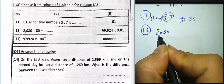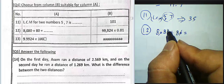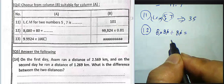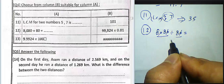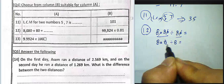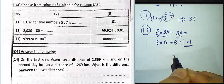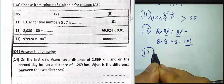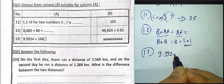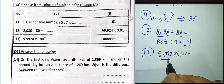Question 12: 8,080 divided by 80. We can simplify by dividing both by 10, giving 808 divided by 8. Then: 8 divided by 8 equals 1, 0 divided by 8 equals 0, 8 divided by 8 equals 1. The result is 101.